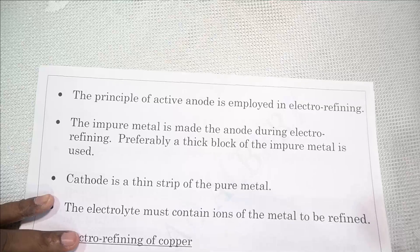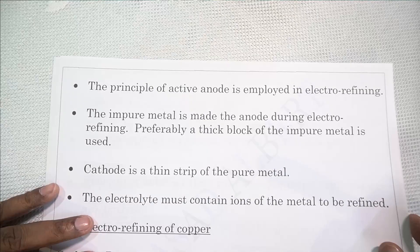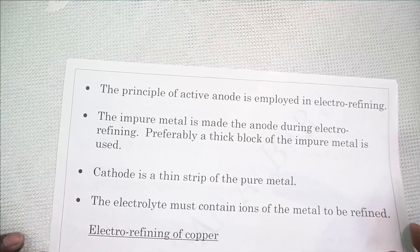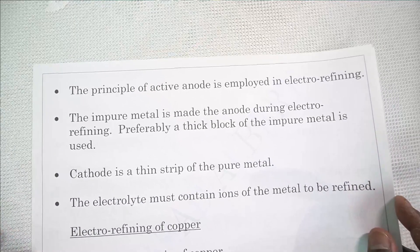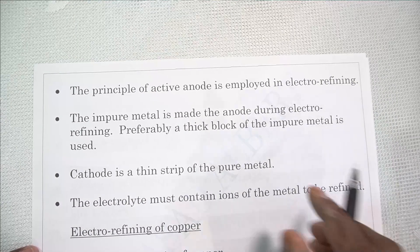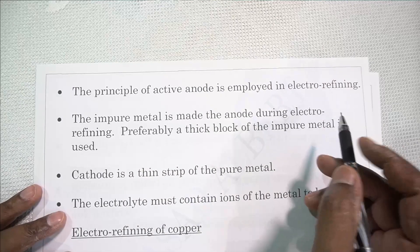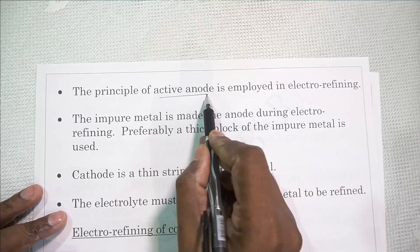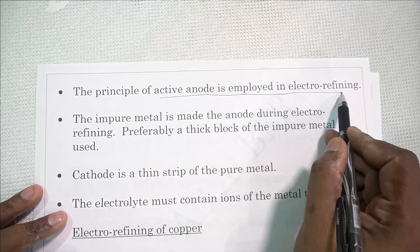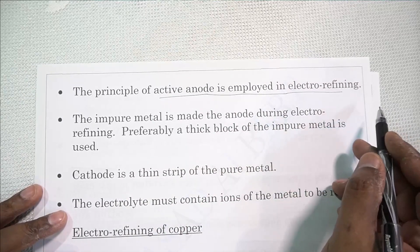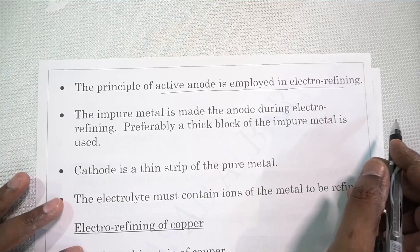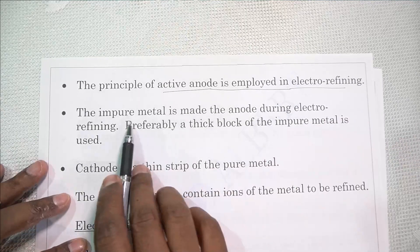The principle of active anode is employed in electrorefining. The principle of active anode, which we have already seen, is where the anode produces its own ions and does not allow anions to discharge.